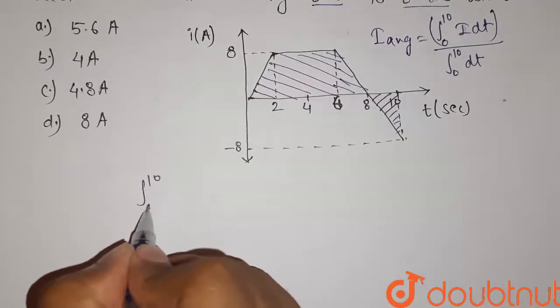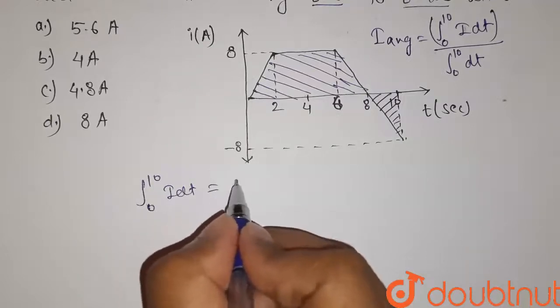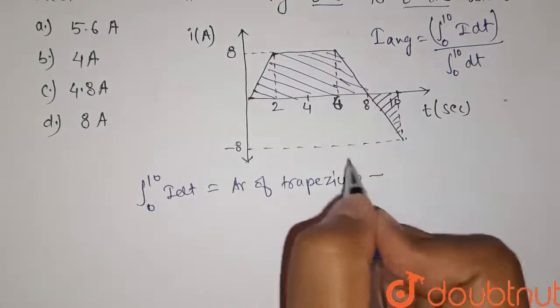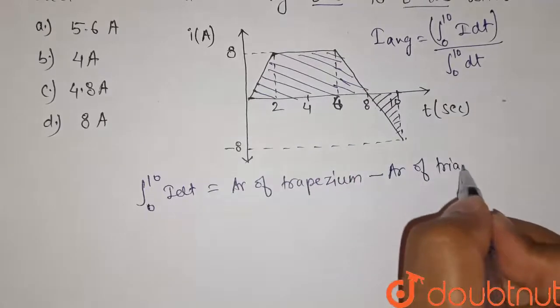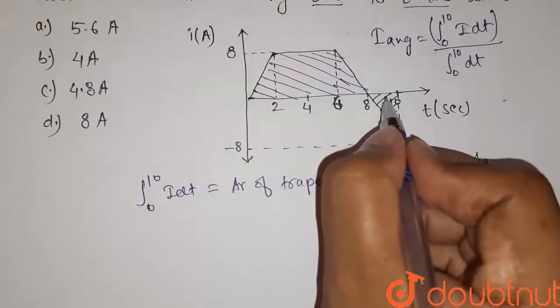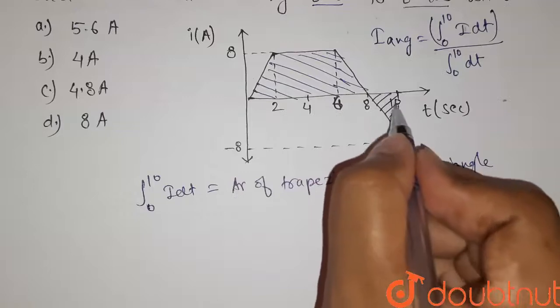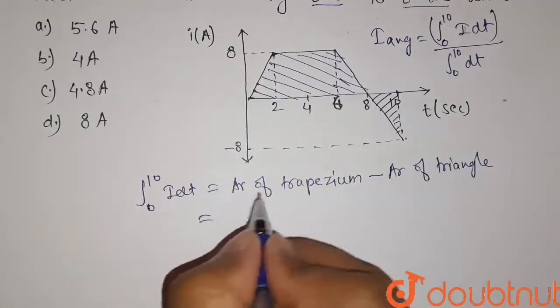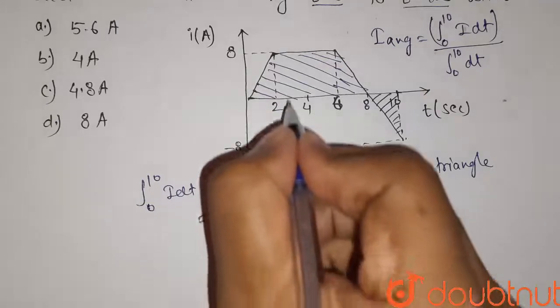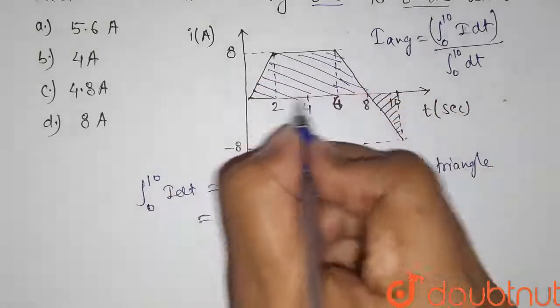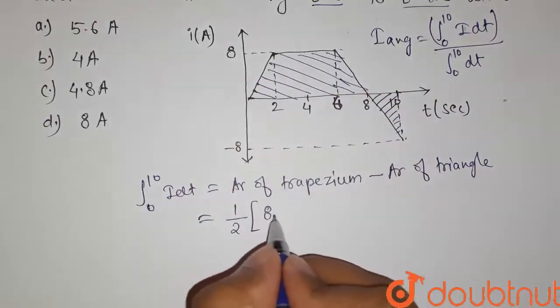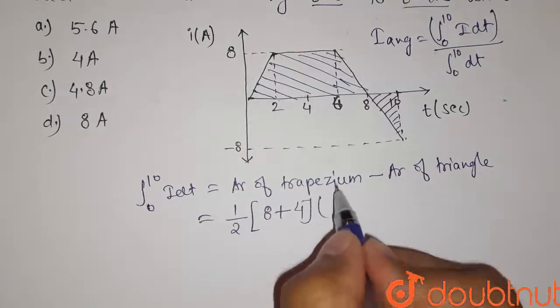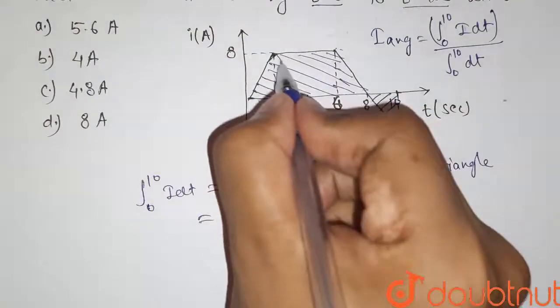The value of integration 0 to 10 of i dt will be equal to area of this trapezium minus area of this triangle, because this area is coming in negative direction and we consider the negative direction area as negative. The area of trapezium is given by 1 upon 2 the sum of parallel sides. Here these are two parallel sides: the length of this parallel side is 8 plus the length of this side is 6 minus 2, that equals 4, multiplied by the distance between the parallel sides. The distance here is 8.